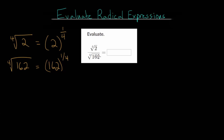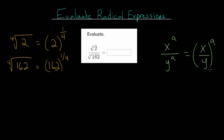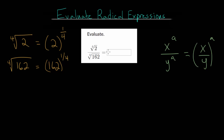One property we can use here, since we have a quotient, is that x raised to the a power divided by y raised to the a power can be rewritten as (x/y) raised to the a power. Usually we see it starting on the right-hand side and then separating. The general idea is that if you have a fraction raised to some exponent, that exponent gets distributed to both the numerator and denominator. In our case, we're working in reverse — starting with our quotient where both are raised to the same exponent. If we rewrite with fractional exponents, we have 2 to the 1/4 divided by 162 to the 1/4.